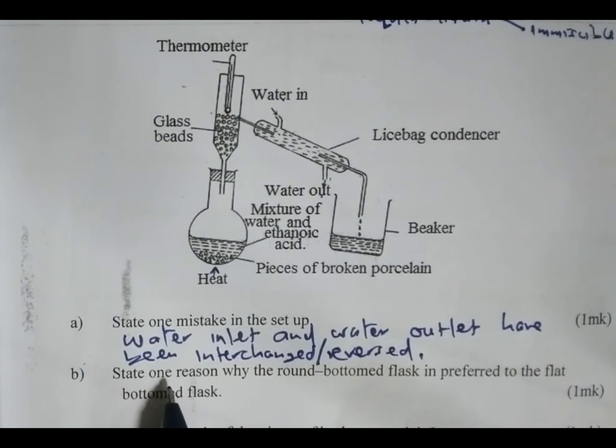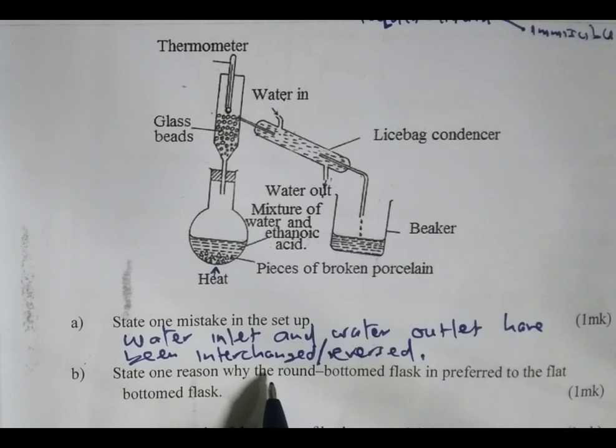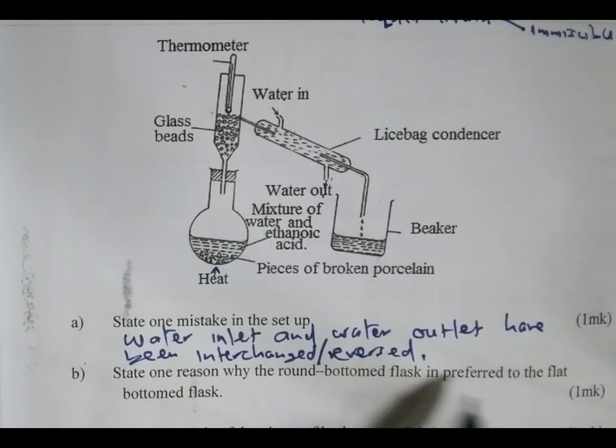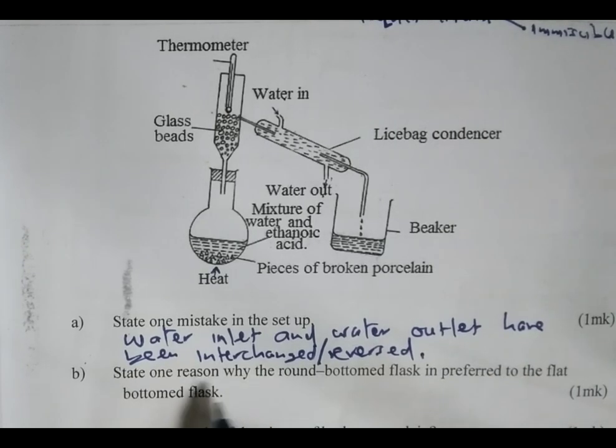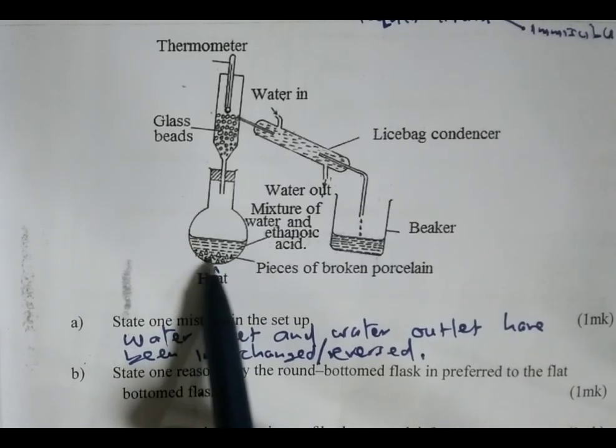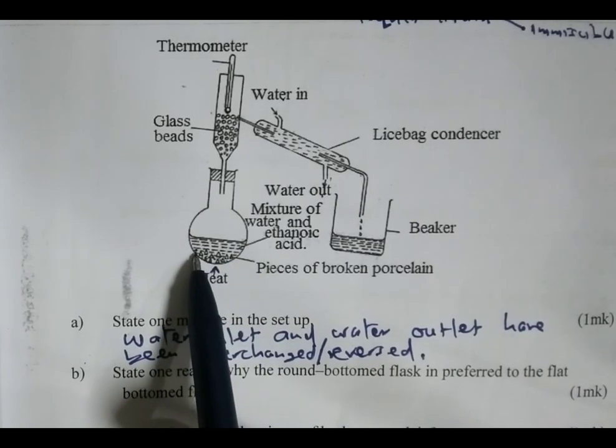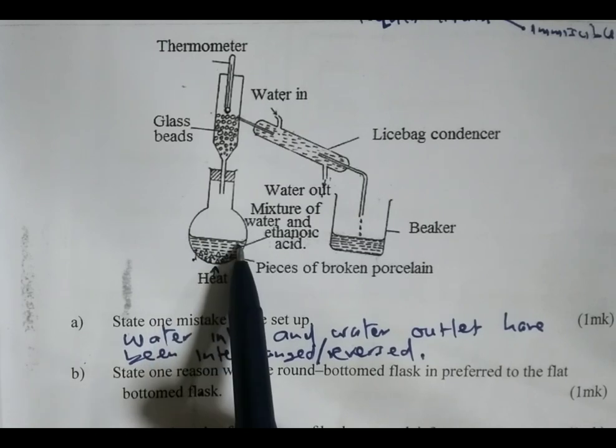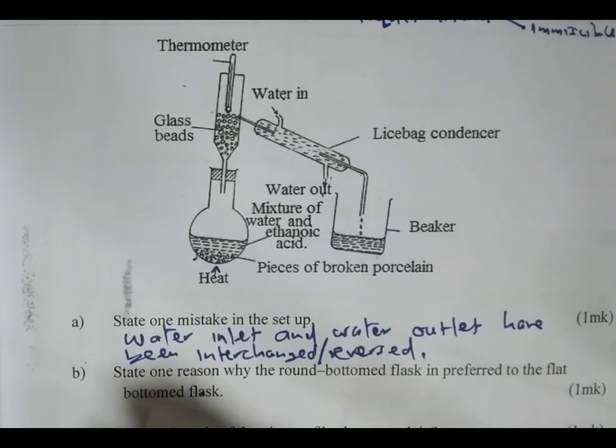Part B: state one reason why a round bottomed flask is preferred to the flat bottomed flask. Remember, we use a round bottomed flask because it ensures even distribution of heat.